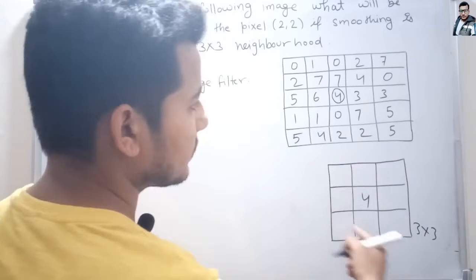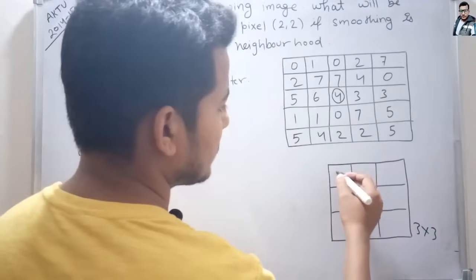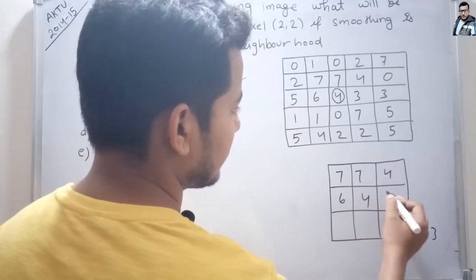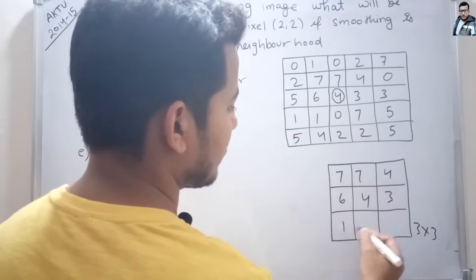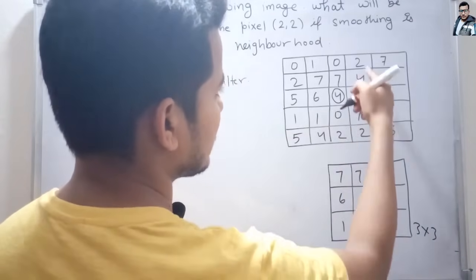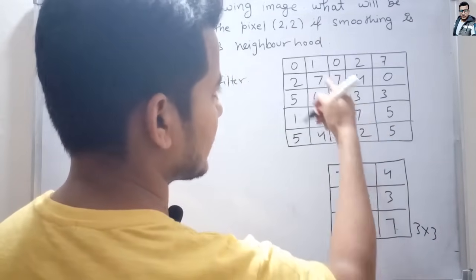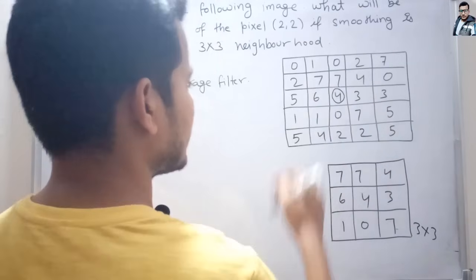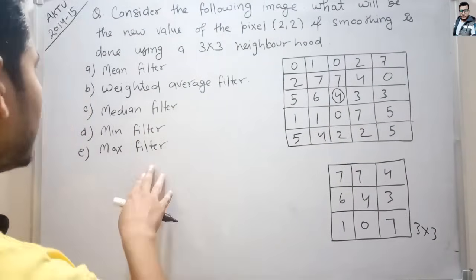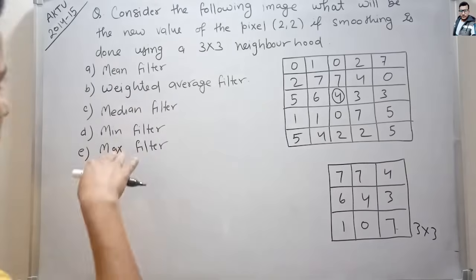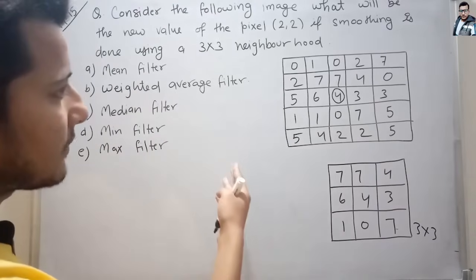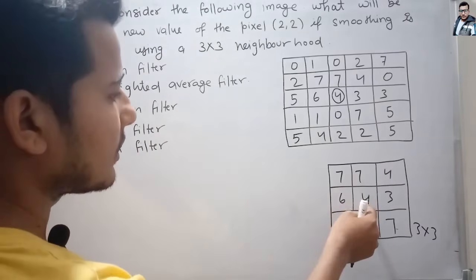The 3x3 neighborhood values are: 7, 7, 4, 6, 4, 3, and 1, 0, 7. This is the 3x3 neighborhood for this pixel at coordinate 2,2. Now let's apply each filter one by one and find the new value of this pixel.